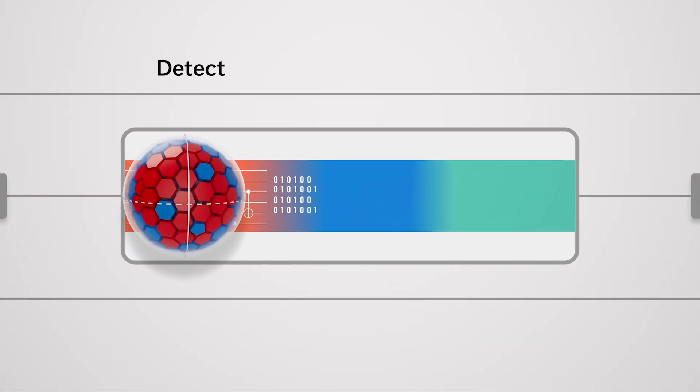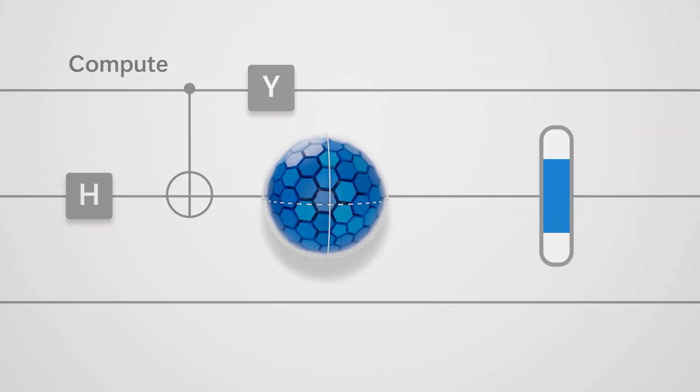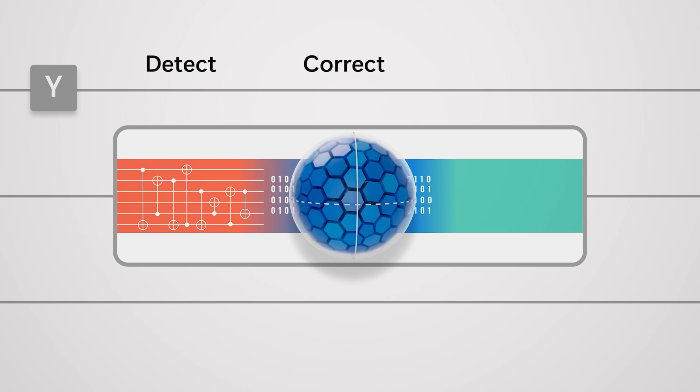It doesn't do you any good to correct errors if you can't actually compute, right? So the whole point here is that we're correcting as we go during the computation to actually get to some application of interest.